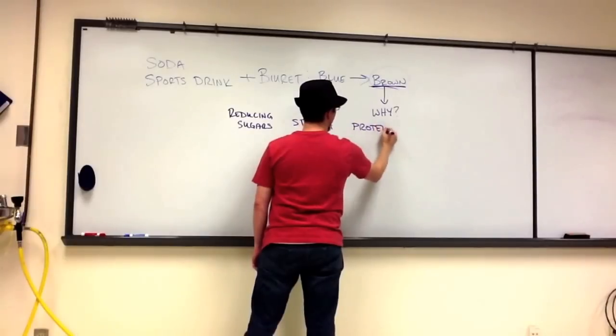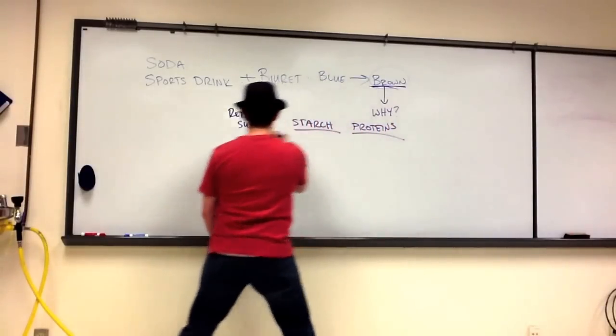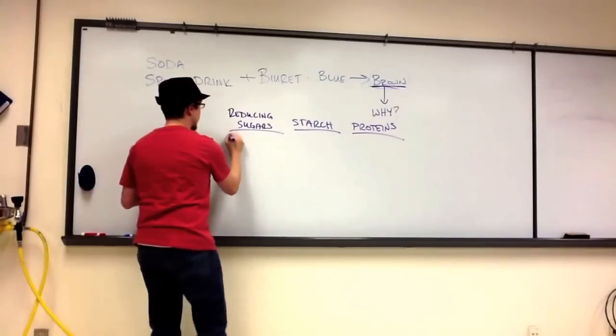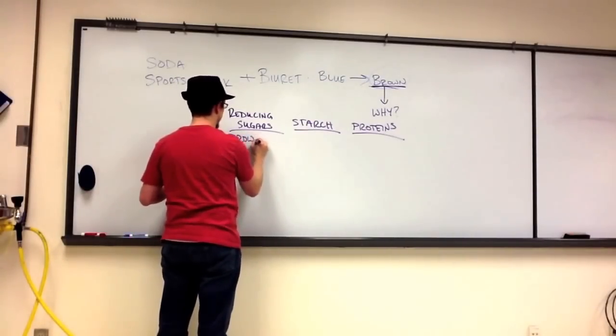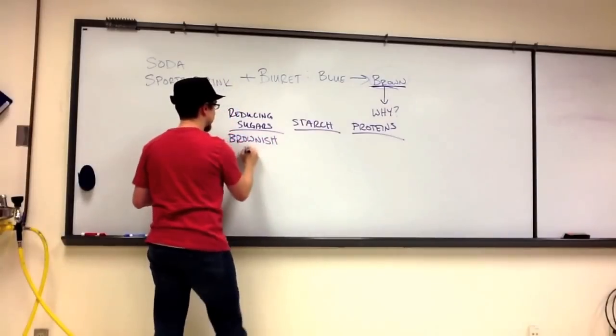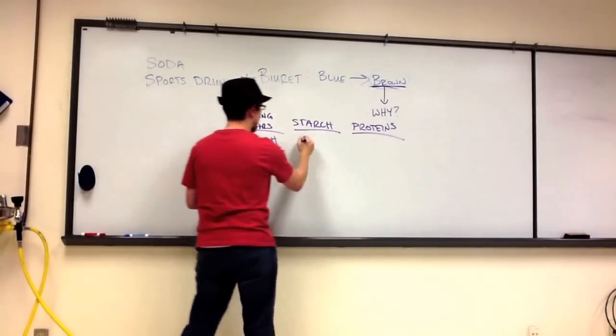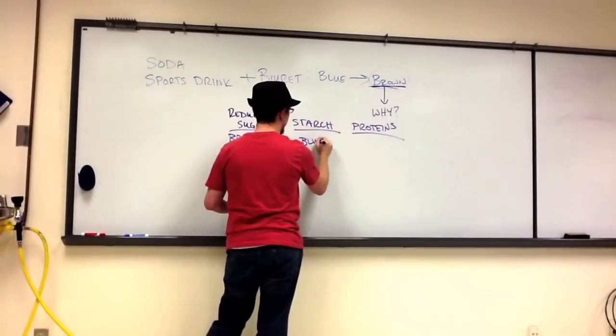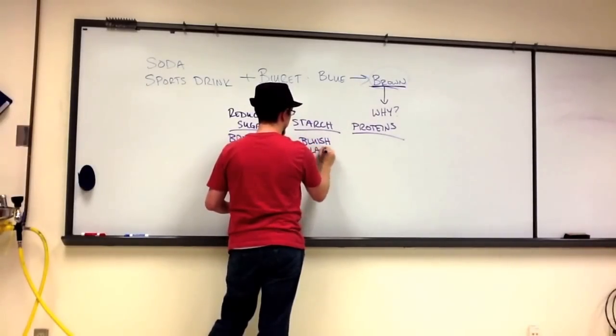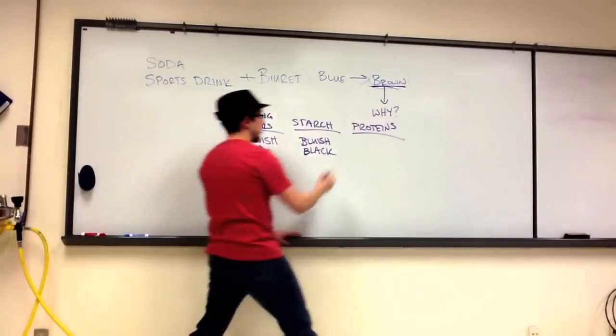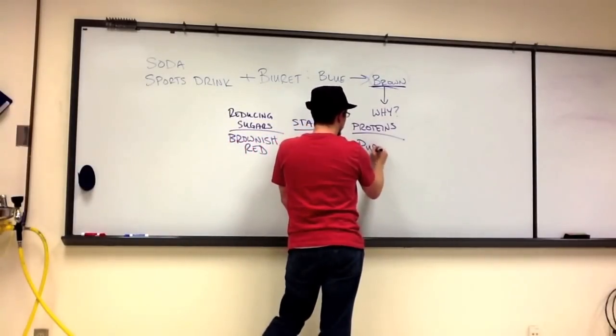what you should have seen was a brownish-red color for reducing sugars, a bluish-black for starch, and then a purple color for proteins.